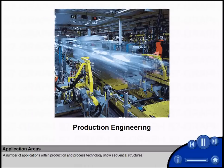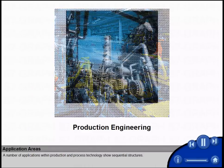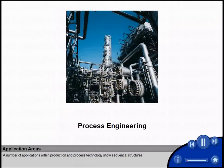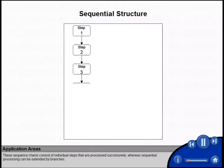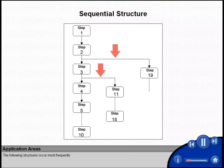A number of applications within production and process technology show sequential structures. These sequence chains consist of individual steps that are processed successively, whereas sequential processing can be extended by branches. The following structures occur most frequently.